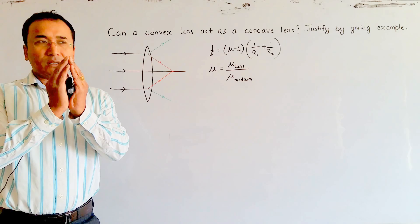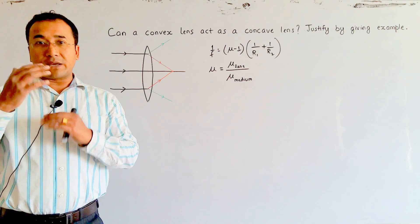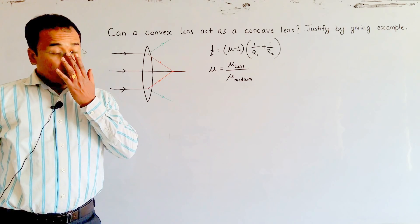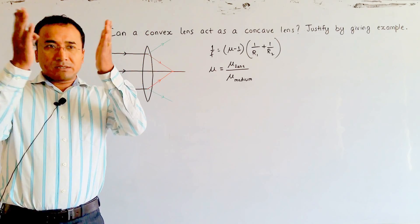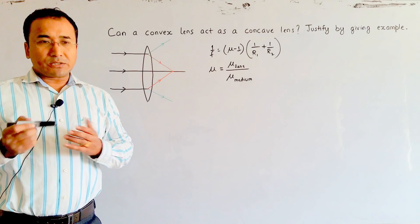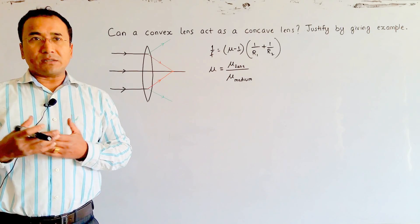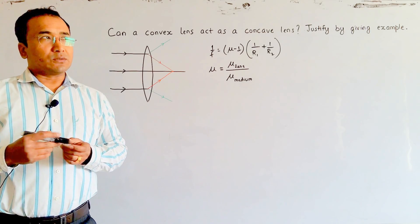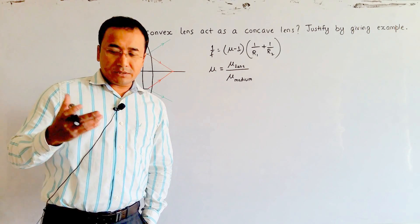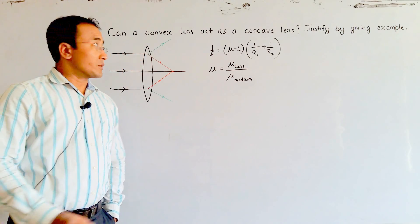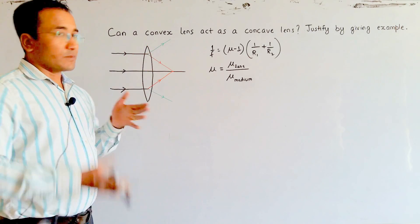A concave lens is narrow in the middle and wider at the edges. Later on, we started to know them by their actions - converging lens and diverging lens. The naming is according to their actions. So now convex means converging.